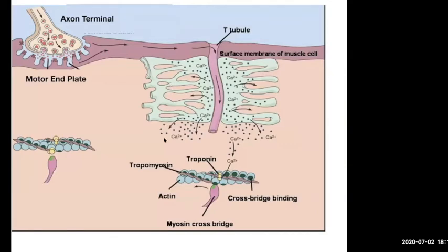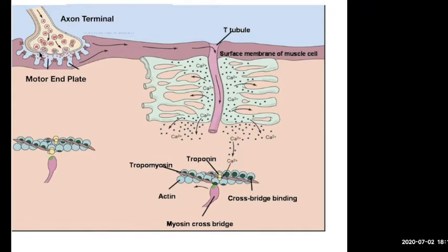What you learned from the sliding filament theory is that the binding of the myosin head to the actin molecule required the presence of calcium. For calcium to be present, that required an electrical signal to come down the T-tubules and cause a reaction that released calcium. To get an electrical signal down the T-tubule, you need an electrical signal going down the sarcolemma of that muscle cell — the sarcolemma being the plasma membrane, basically your cell membrane. To get that electrical signal going down that cell, you need it to start somewhere. So this is what we're going to talk about: the initiation of that signal at the motor end plate.